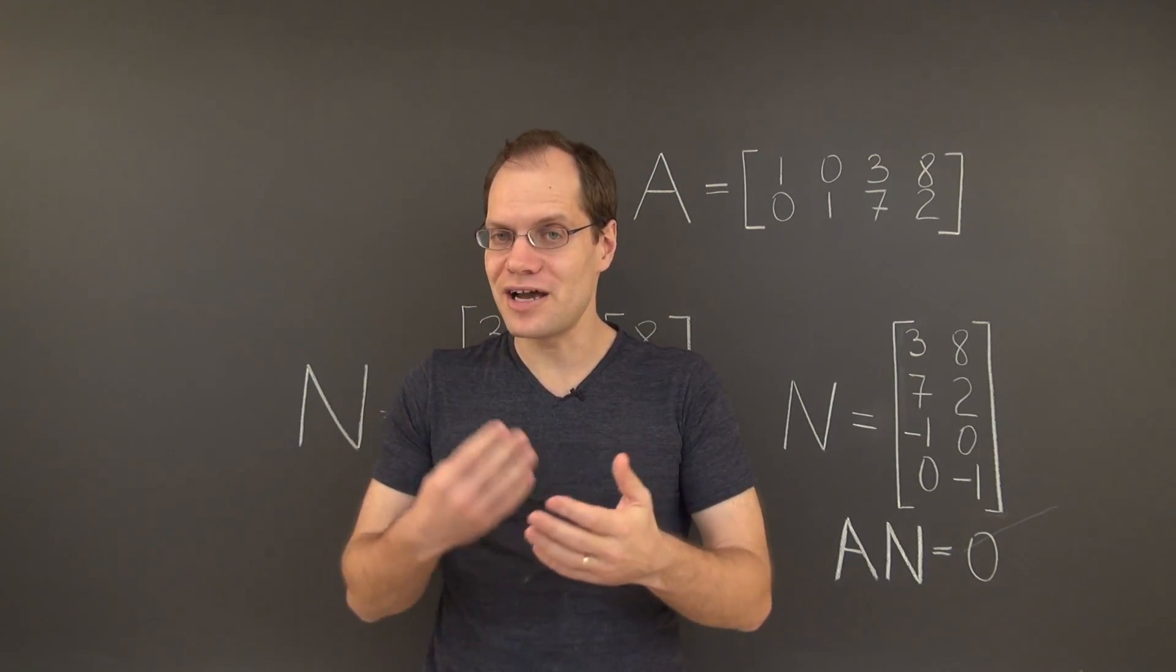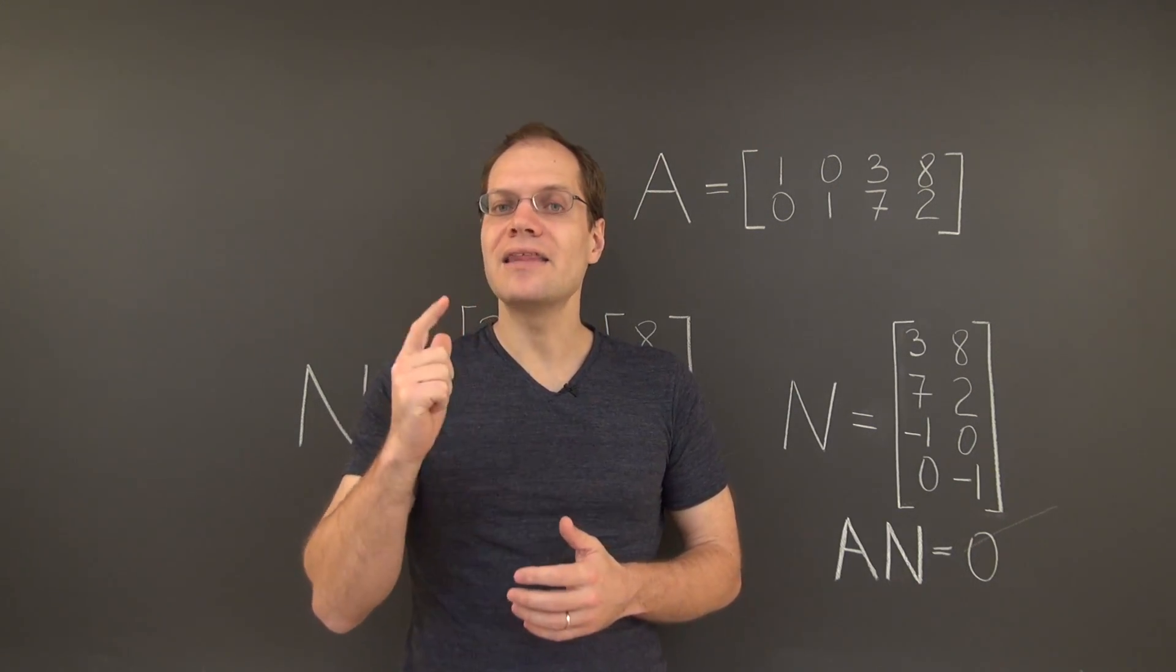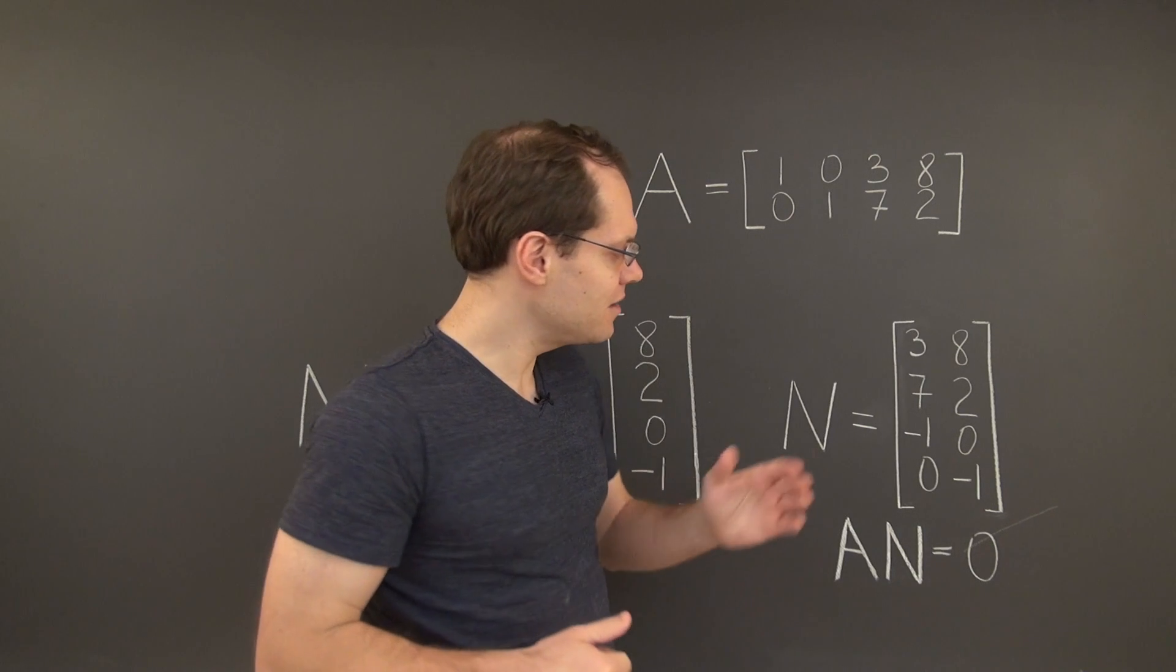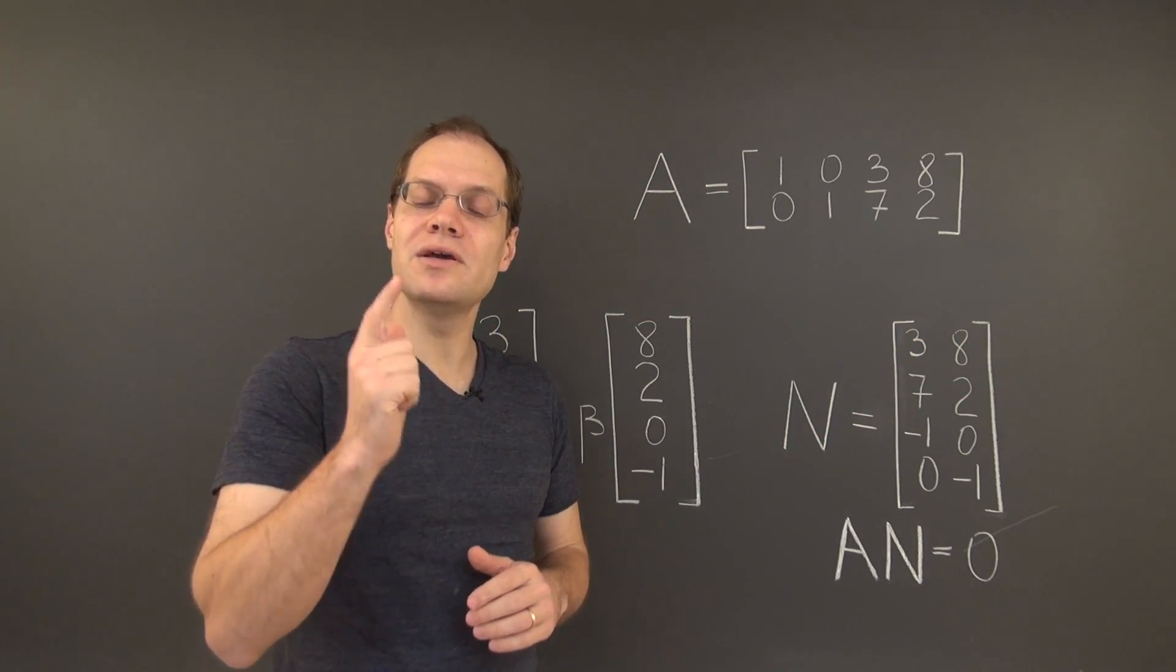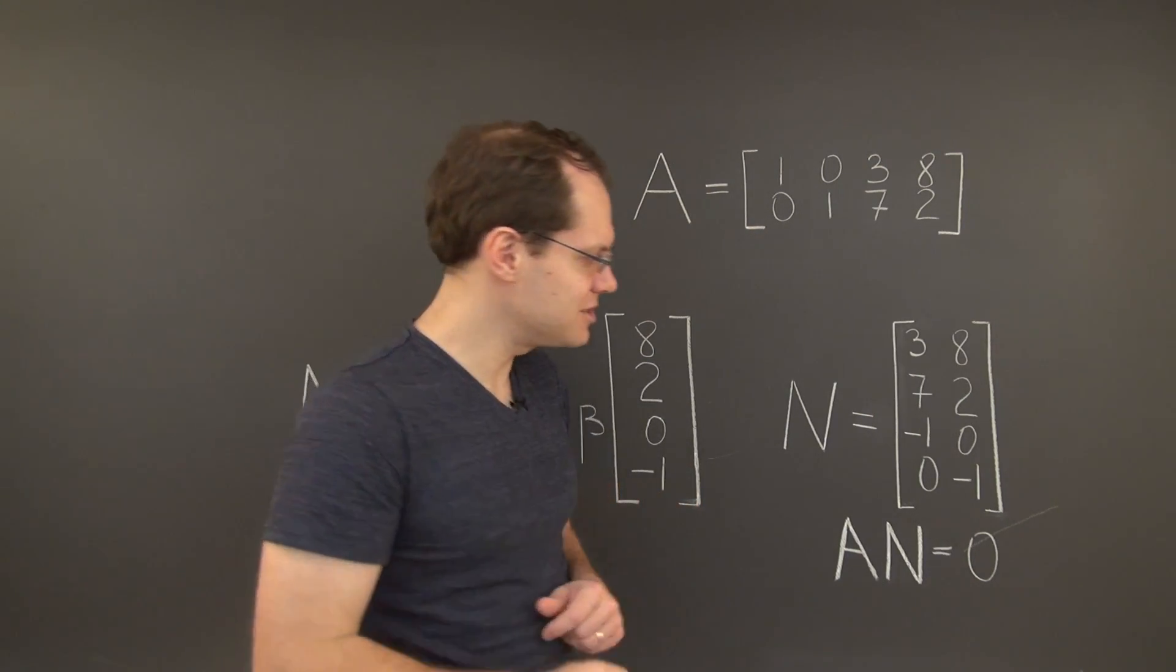Now, after trial and error, you'll realize that there is only one combination that will work. And that is to combine alpha and beta into a column and to put it on the right of the matrix N. That's the only way to come up with a compatible matrix product. And it looks like this.